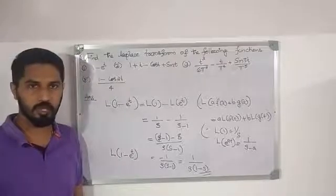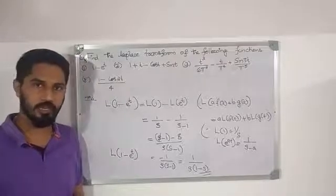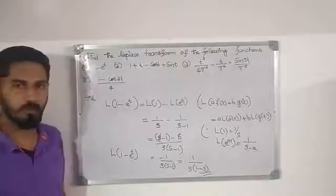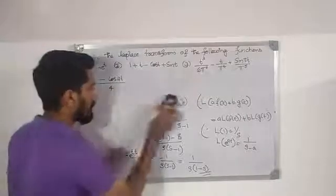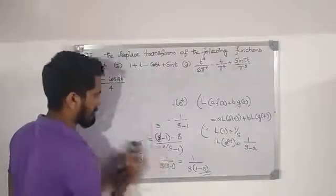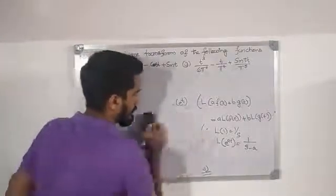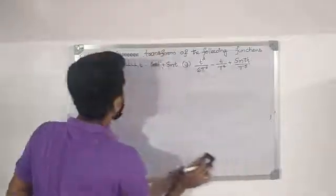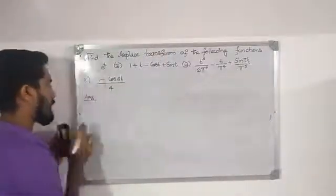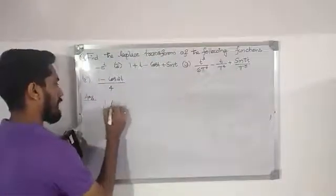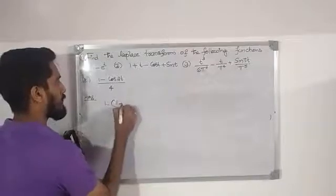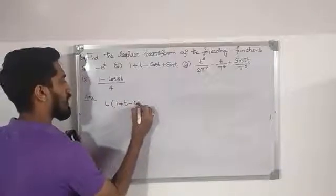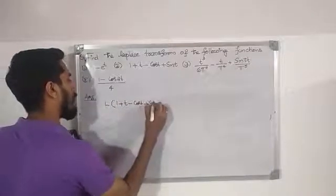This is the formula for the first problem. Next, we want to find L{1 + t - cos(t) + sin(t)}.